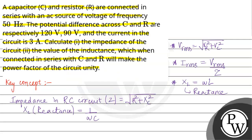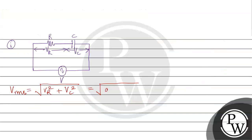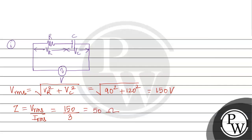VR is 90 volt and VC is 120 volt, so V_RMS works out to 150 volt. Impedance Z equals V_RMS divided by I_RMS, which is 150 divided by 3 ampere, giving Z equal to 50 ohm. This is the answer for the first part.